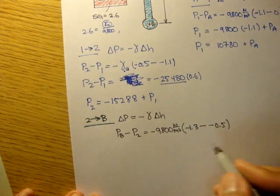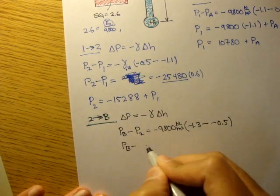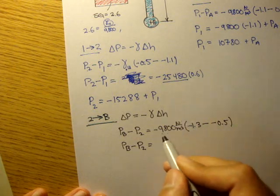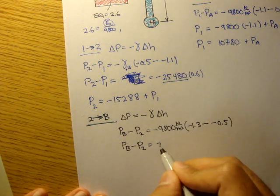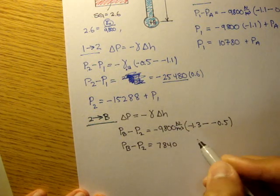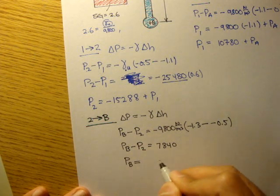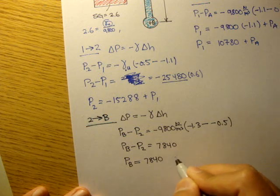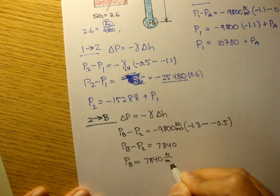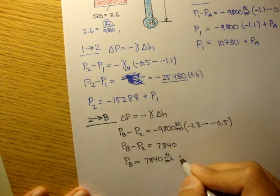We get pressure of B minus pressure of 2 is equal to, multiply all this out, and we get 7840. So pressure of B is equal to 7840 newtons per meter squared plus P_2.